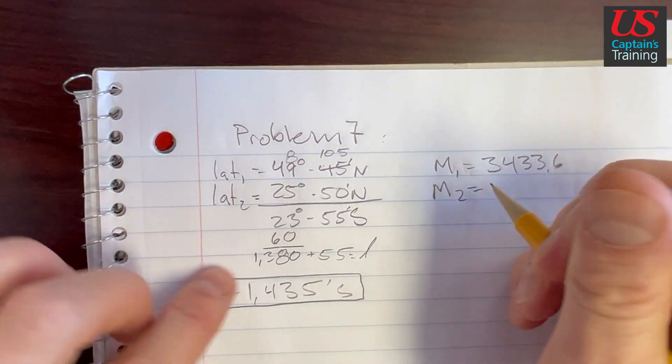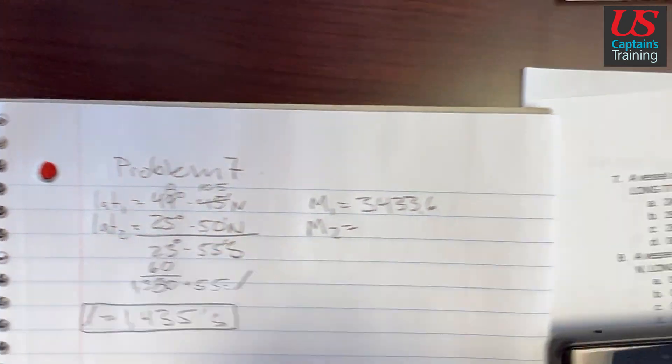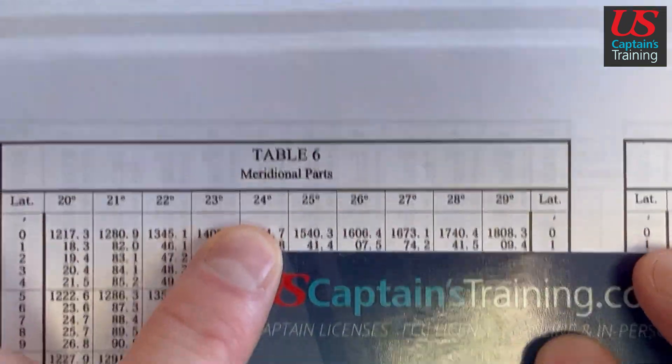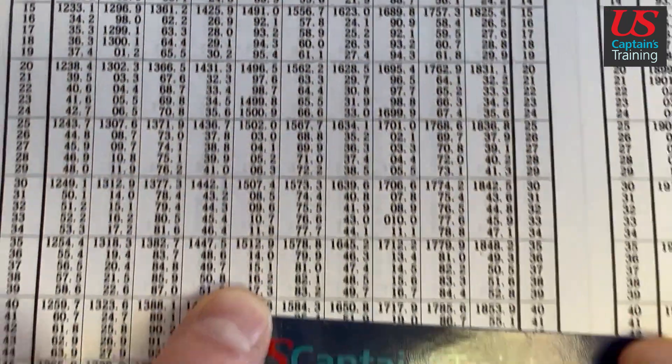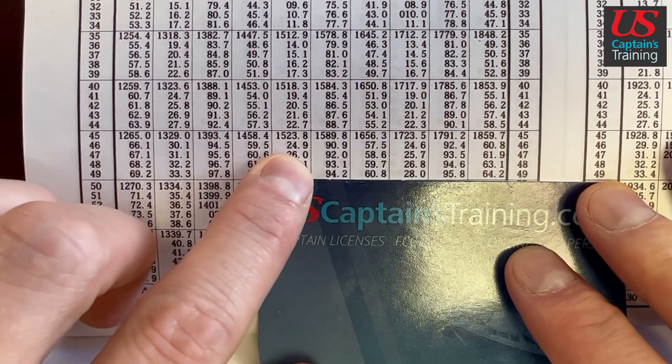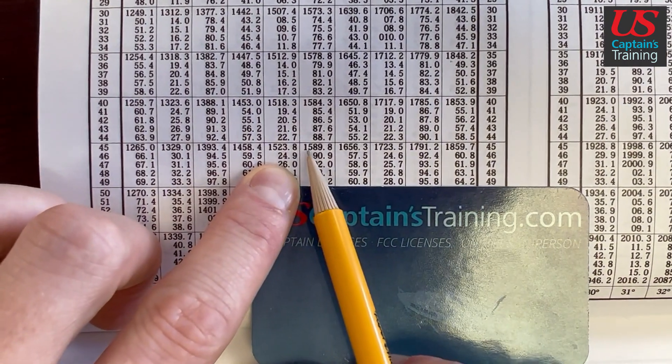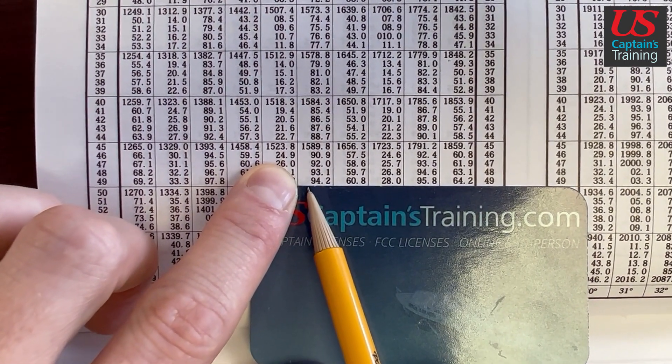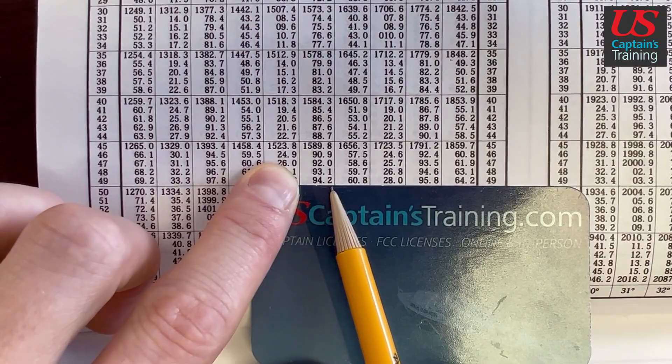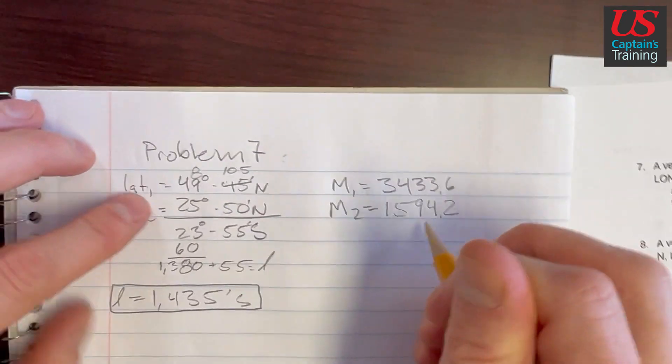So m2 is equal to 25, 50 north. So we find 25. Here's 25 degrees on top. And we cruise all the way down to 50, 25, 50. And so yeah, this 15 comes all the way down. So 1594.2.